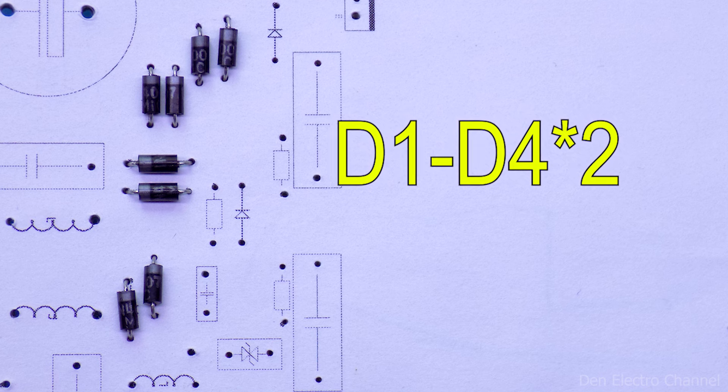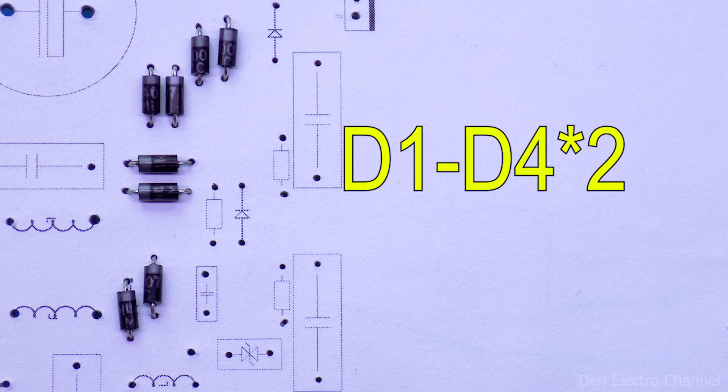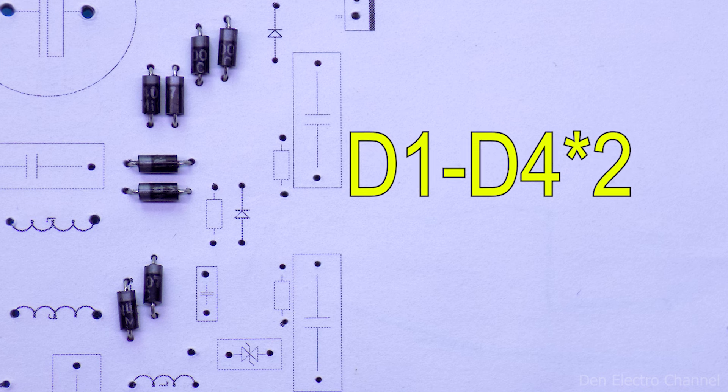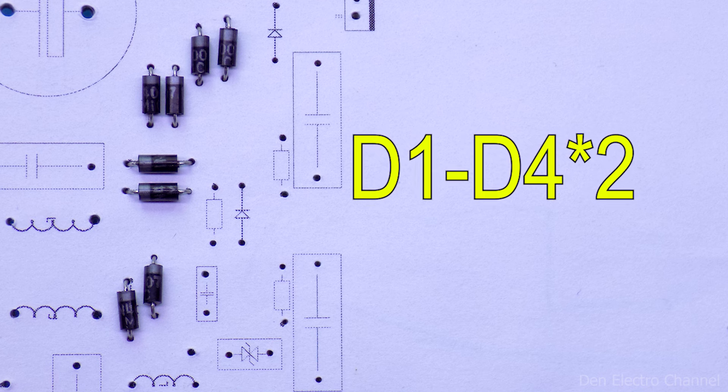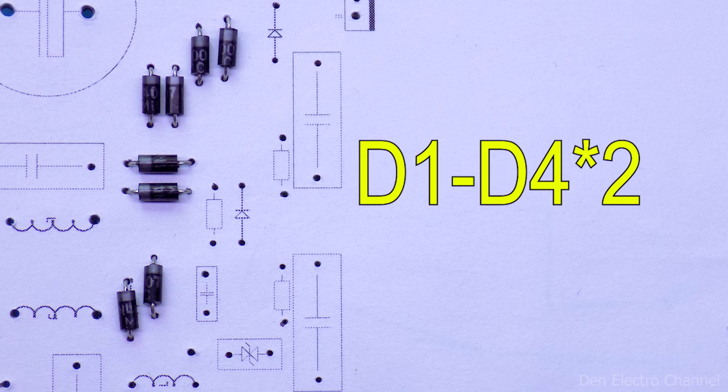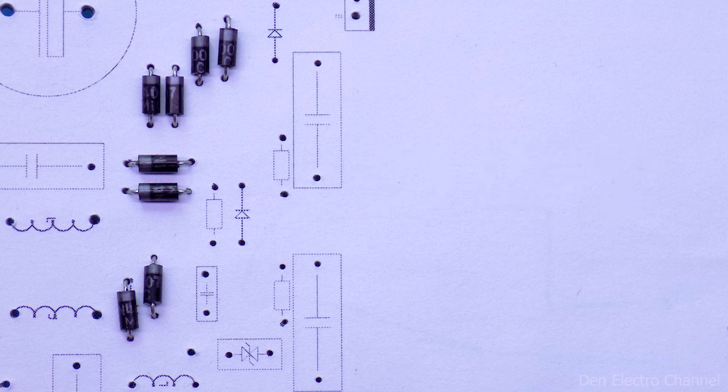Such a diode bridge will withstand two amperes, but it is advisable to take a larger supply. If you have a powerful diode bridge, then you can install it. But you will have to change the board layout. I installed diodes only because they are easier for an ordinary radio amateur to find. They are found in almost any electronics.